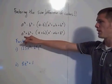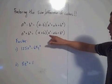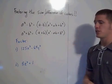If you have a cubed plus b cubed, then you have a plus b times a squared minus ab plus b squared. These two formulas you just have to memorize.